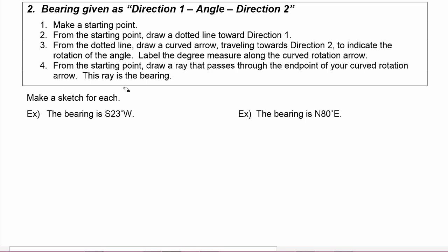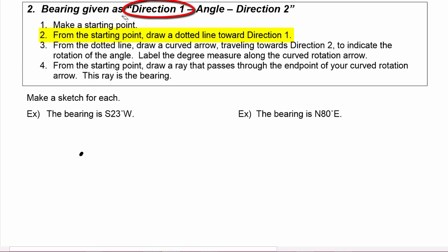In this first example, the bearing is south 23 degrees west. Step one tells us to make a starting point. Step two says from the starting point, draw a dotted line toward direction one. In our case, direction one is south, so we're going to draw a dotted line to the south.